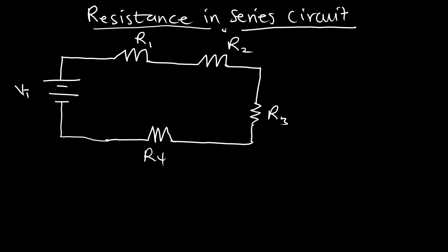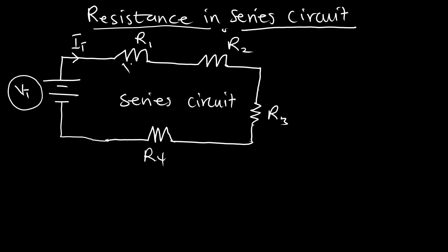Each resistor is offering a resistance to the flow of current. In a series circuit, the same current I is flowing through the circuit. We will also know that the total voltage is equal to the voltage drop across resistor 1, plus voltage across resistor 2, plus voltage across resistor 3, plus voltage at resistor 4. We can write this as: VT = V1 + V2 + V3 + V4 — equation 1.